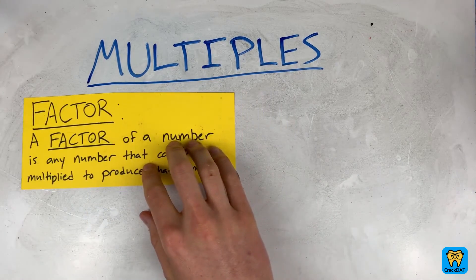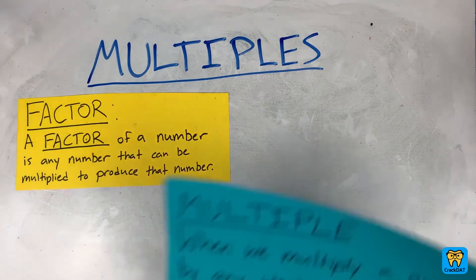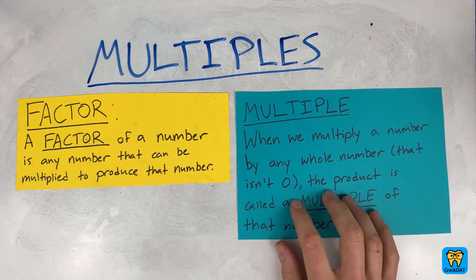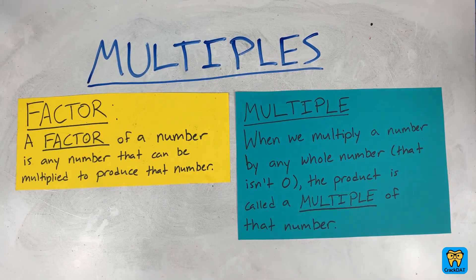Whereas, when we multiply a number by any whole number that isn't zero, the product is a multiple of that number. Every number has infinitely many multiples. I think an example might help.